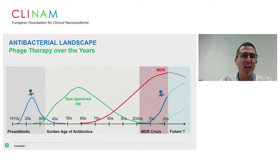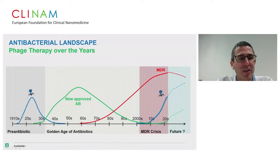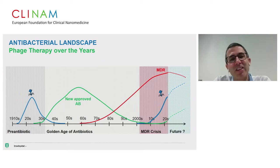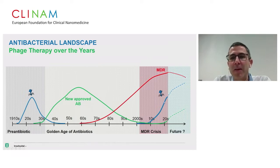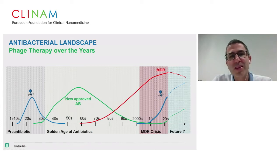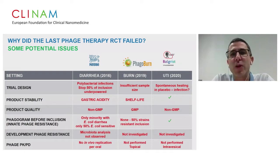Phages were discovered far earlier than the first antibiotic, and were already being used in the pre-antibiotic era. But as new antibiotics came to market, phage therapy disappeared because antibiotics were reliable and there was no resistance. Now that resistance is growing and we face a multi-drug resistance crisis, interest in phage is rising again. Either we can develop new molecules — costly and time-consuming — to curb antibiotic resistance, or we can think about how to use these bacterial viruses for our benefit.